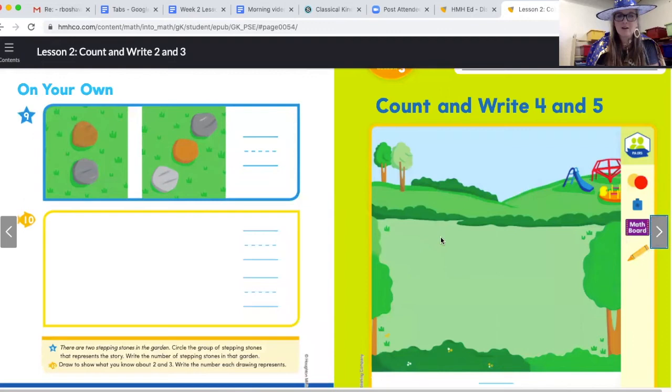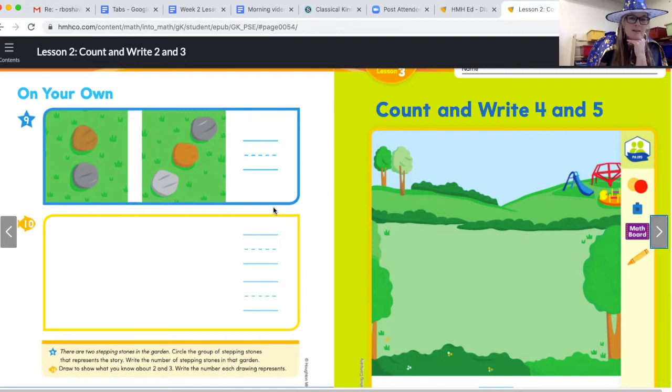It's time for on your own. Are you ready for on your own? Turn your page right here on your own. Number nine, this blue box here. There are two stepping stones in the garden. Circle the group of stepping stones that represents the story. I'll say it one more time. There are two stepping stones in the garden. Which of these pictures represents two stepping stones? And then you're going to write the number on that line. You can pause it while you do this. Draw to show what you know, this section here. Draw to show what you know about two and three. Write the number each drawing represents. Do you remember yesterday we talked about this? Because it's really hard to look at that box and know what you're doing. So I'm just going to show you again.